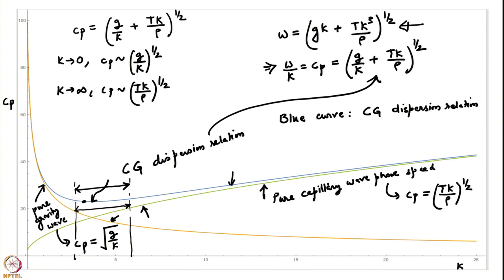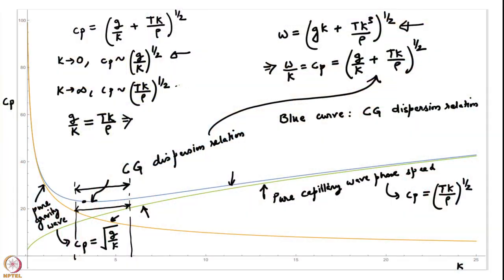We can make a quick estimate by finding the k where g/k equals tk/ρ. Since g, t, and ρ are fixed for a given fluid, this gives a particular cutoff wavenumber around which capillary-gravity effects are important. You can immediately see that k is given by (ρg/t)^(1/2).